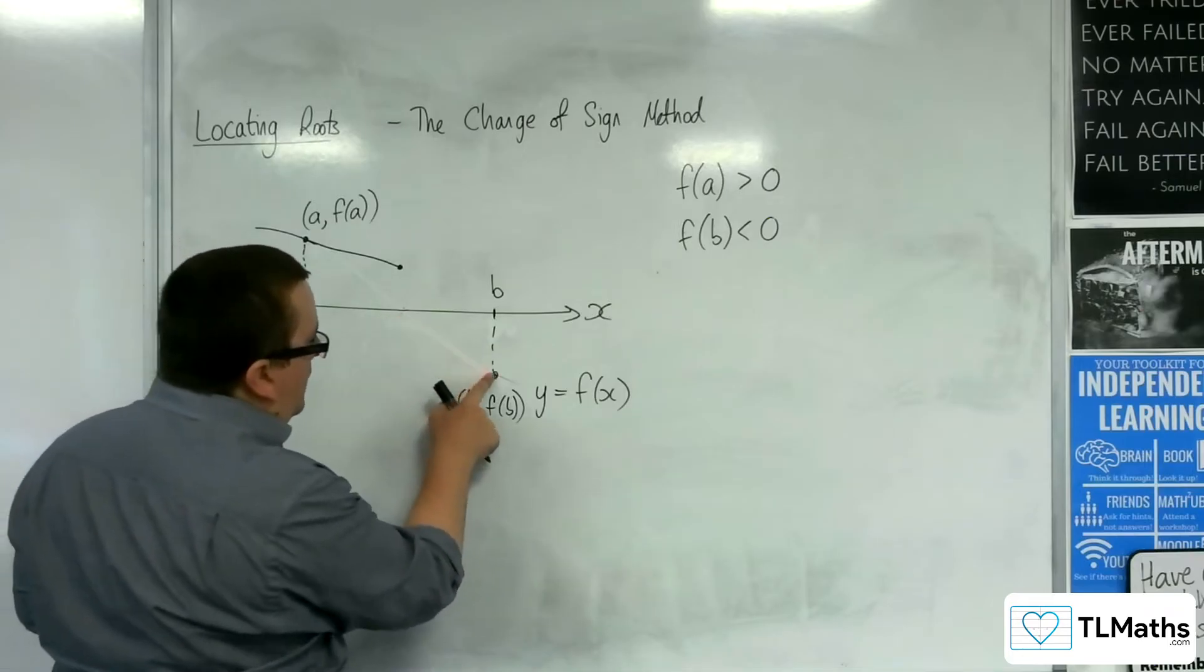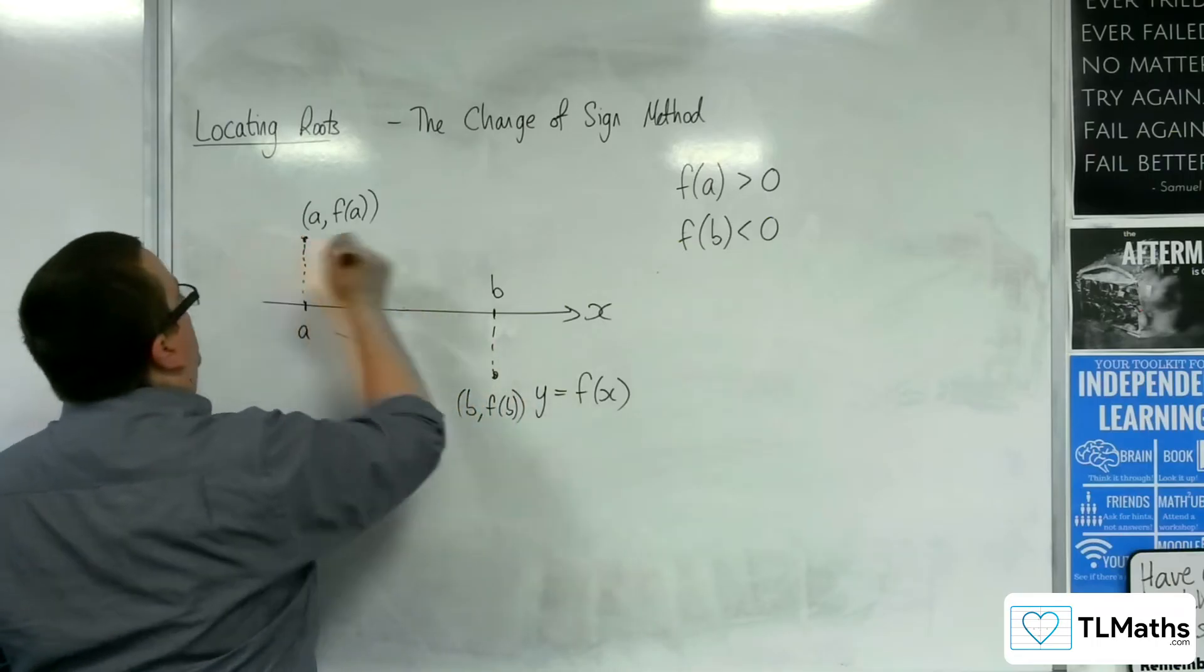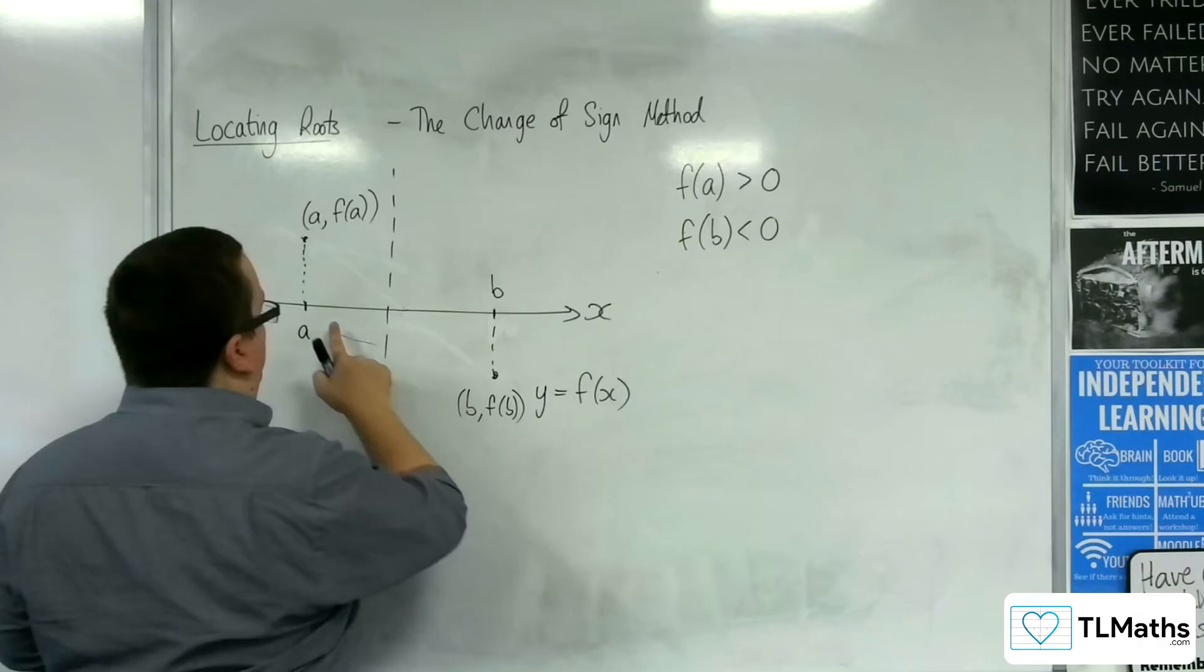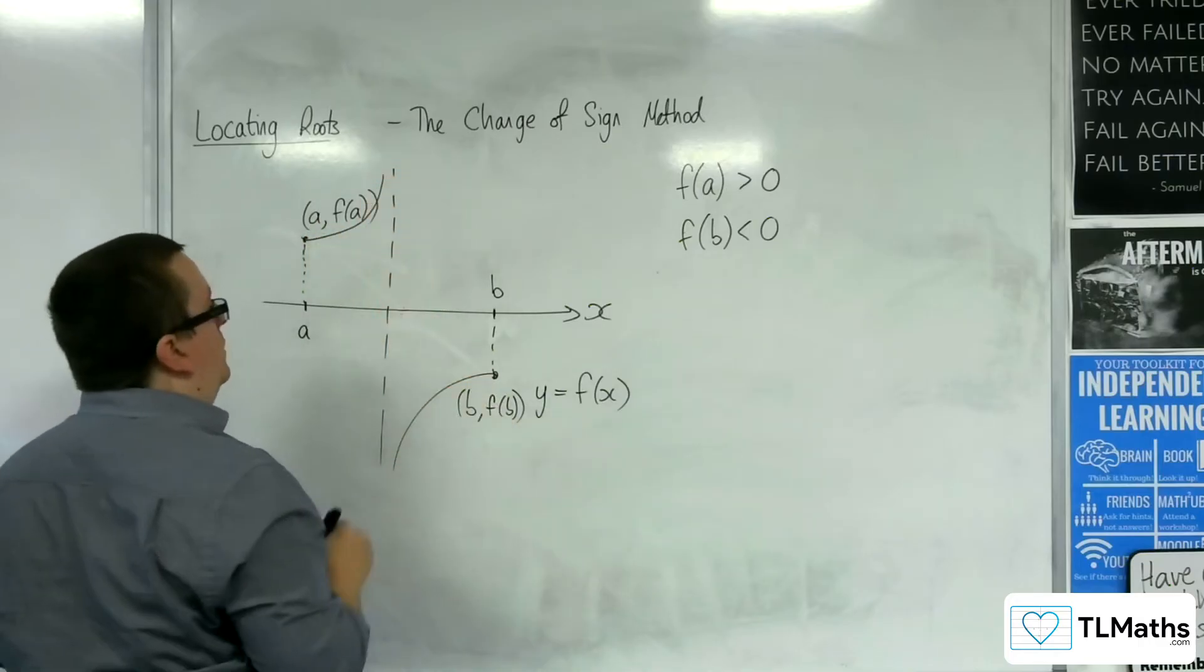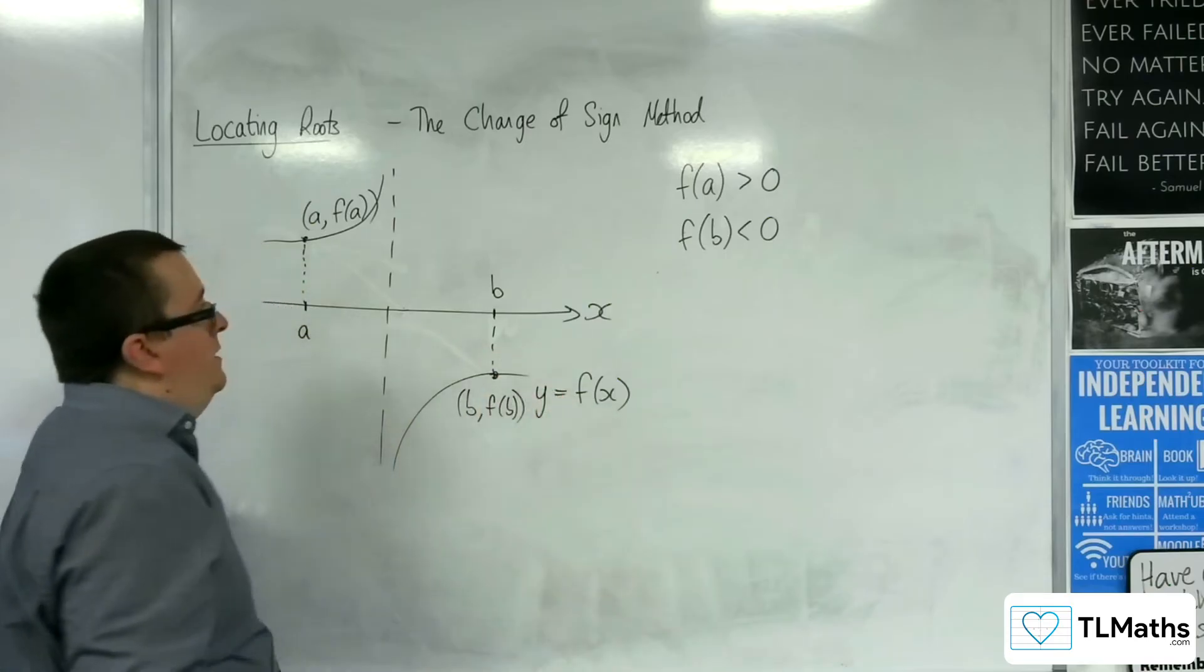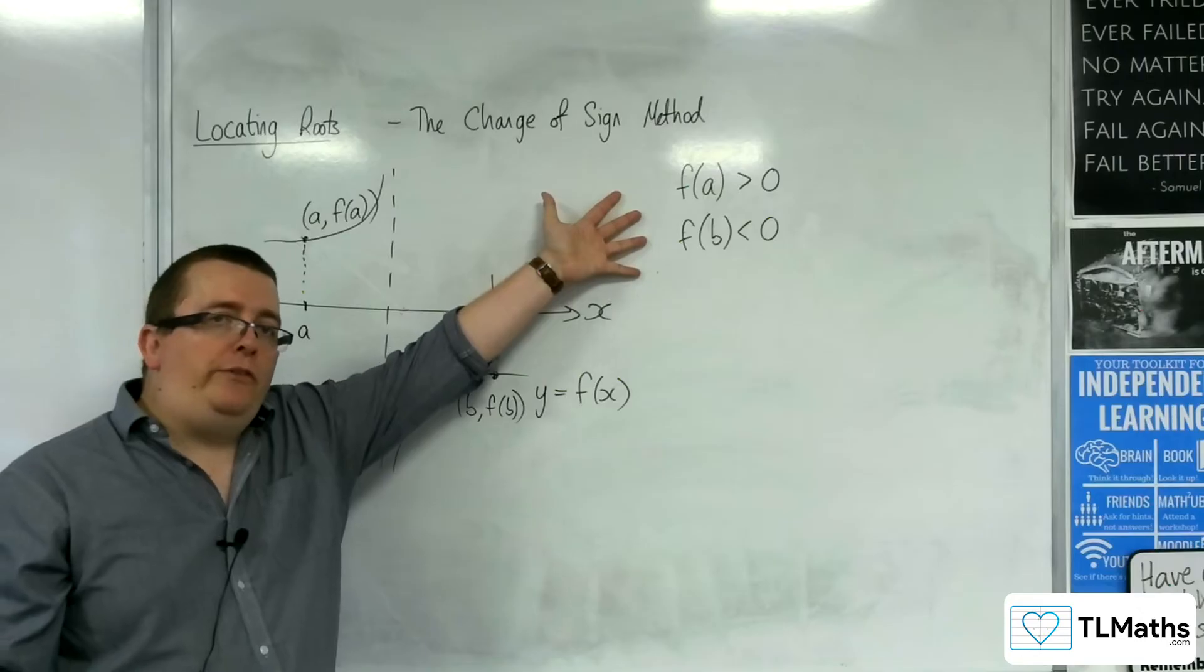Or maybe the curve actually has an asymptote somewhere between those two points. Maybe it looks like this. But I'd still get that behaviour of this change of sign.